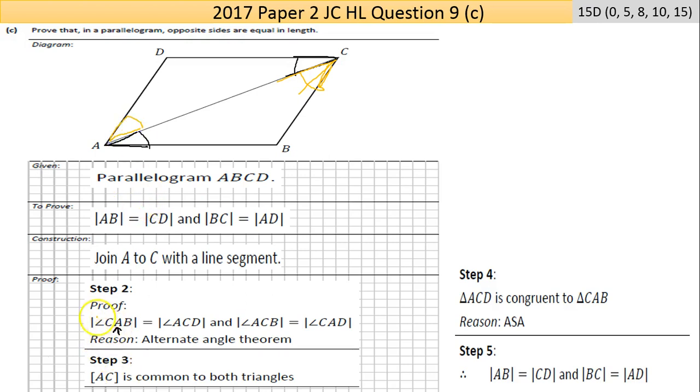Now the reason - and the reason is very important to restate - the reason: alternate angle theorem. So between two parallel lines, a line crossing them creates alternate angles, and they're equal.